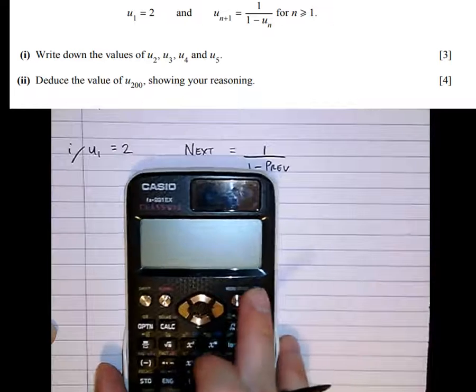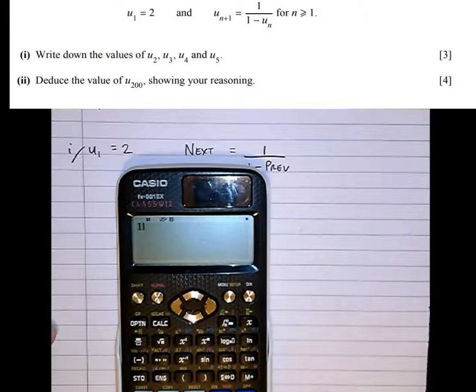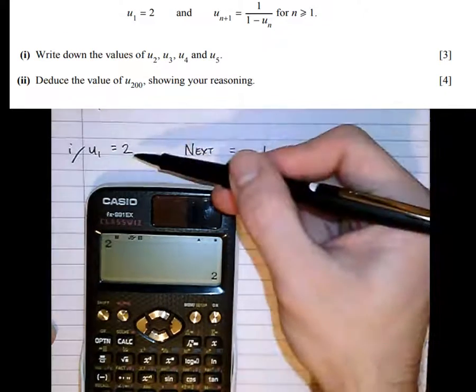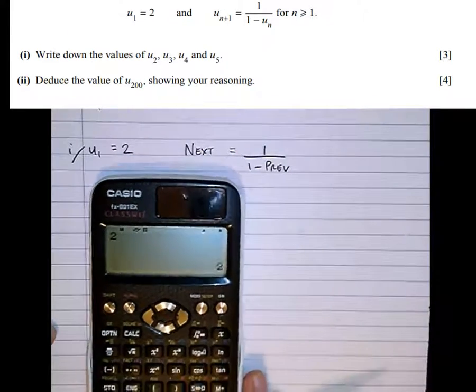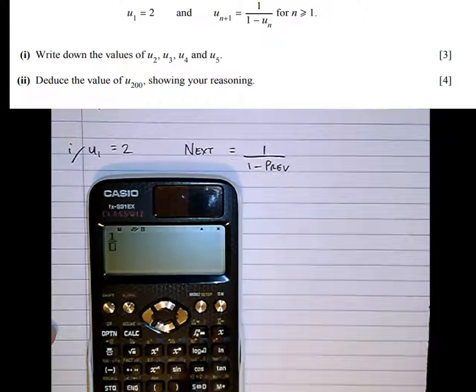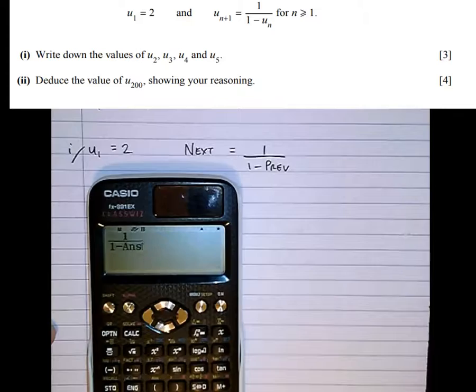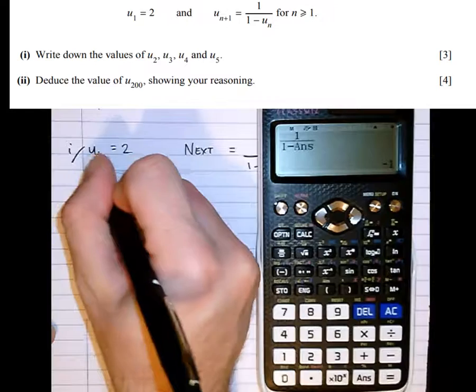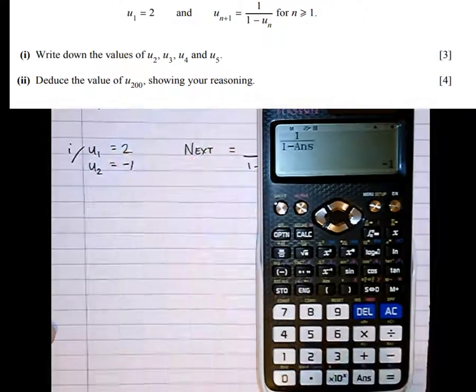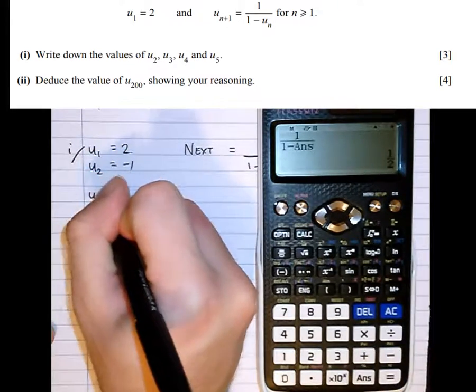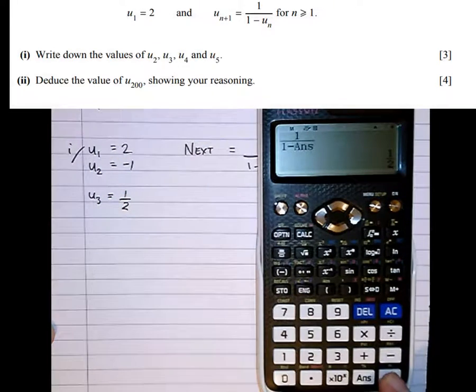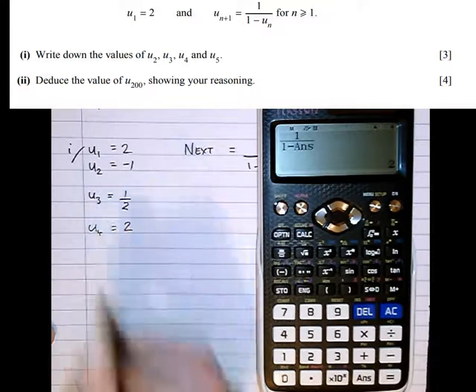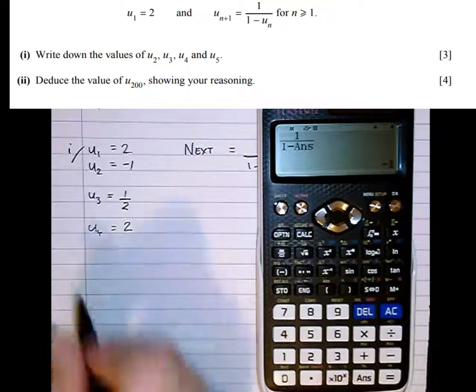So putting that in the calculator, 2 is the first term, then equals. So 2 is now saved in the answer button. So now to get the next term, we do 1 over 1 minus the previous, which we've stored in the answer. So pressing equals, the second term is minus 1. The third term is 1 half. The fourth term is 2. And the fifth term is minus 1.